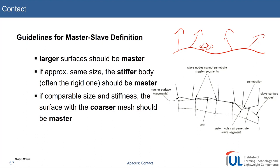If the bodies are of comparable size and stiffness, another criterion you can apply is mesh density: the coarser mesh should be the master. This is for a similar reason as the first rule — it is computationally more efficient. If they have the same size and stiffness there is no right or wrong technically, but using the coarser mesh as the master will have a positive influence on your computational time. The results should be similar if you do not apply this third rule.